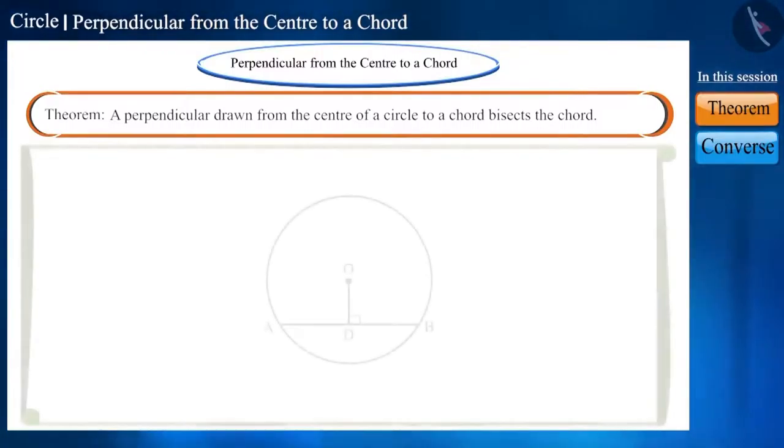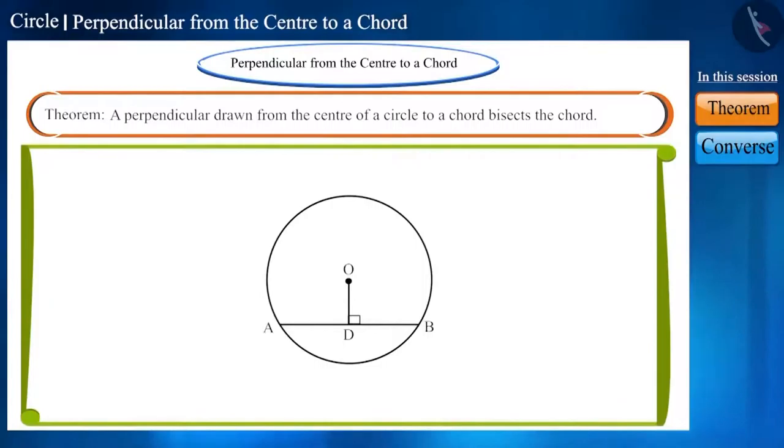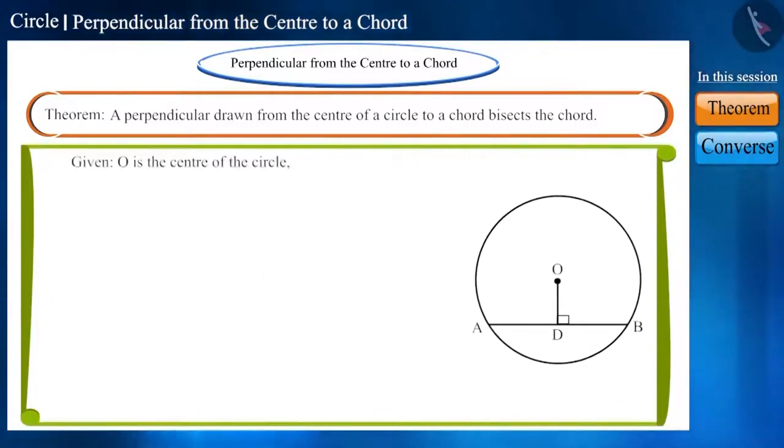With the help of the statement, draw a figure. We are given that OD is perpendicular to chord AB and we have to prove that line segments AD and BD are equal. If we join OA and OB in this way, we will get two triangles, ODA and ODB.